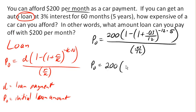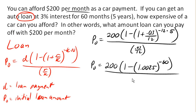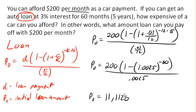I can go ahead and evaluate: 0.03 over 12 is 0.0025. Negative 12 times 5 is negative 60. So now I just need to evaluate this to figure out the amount of my loan. I'm going to skip the calculator this time, and it turns out that the answer is $11,120.